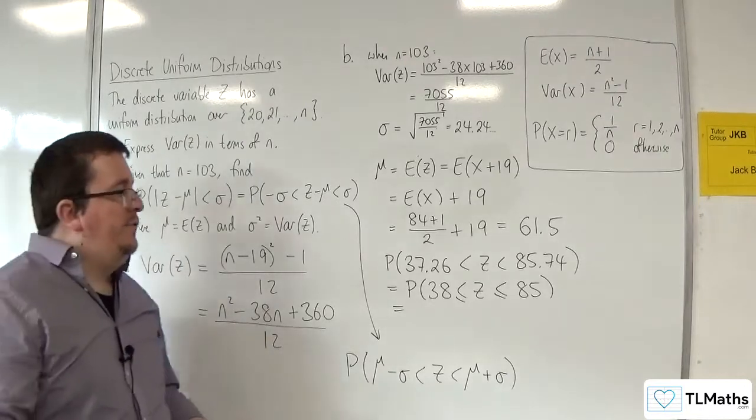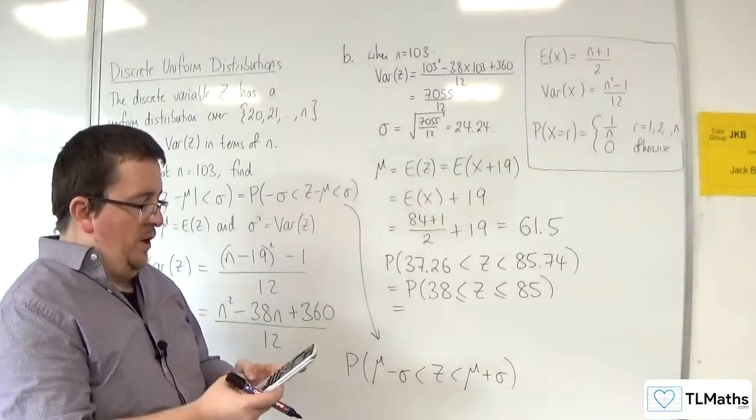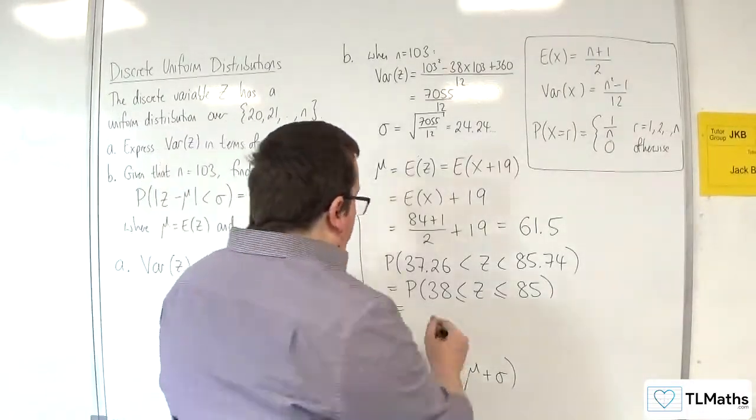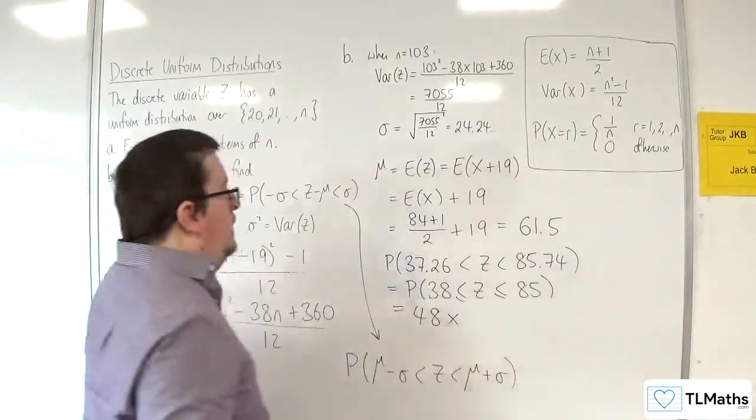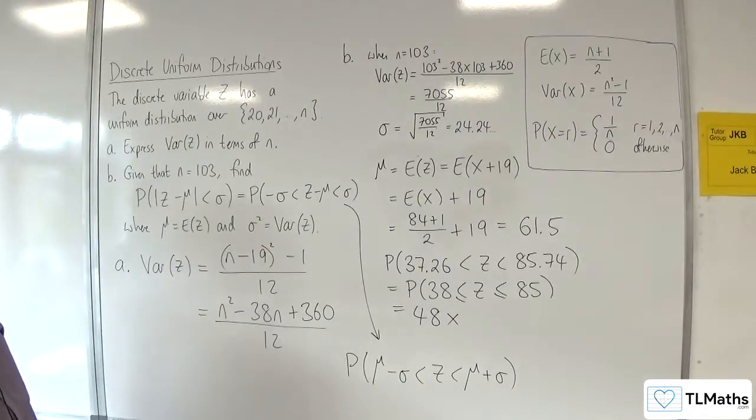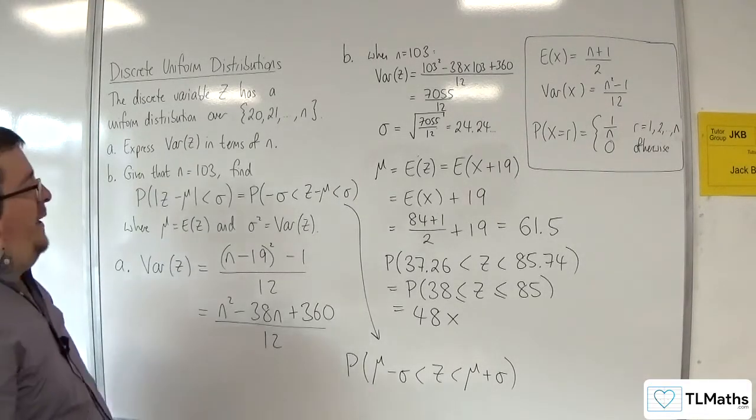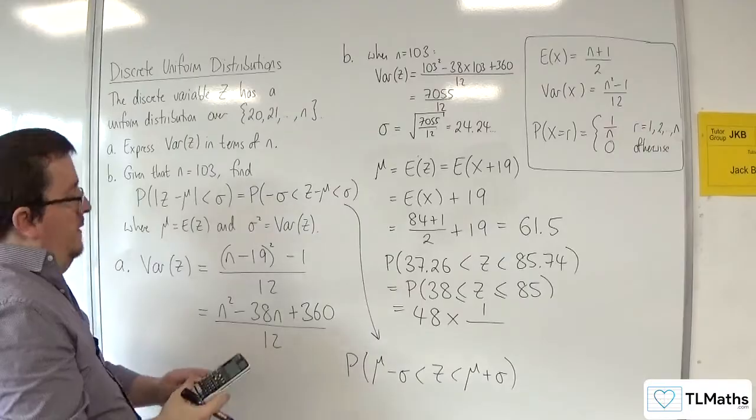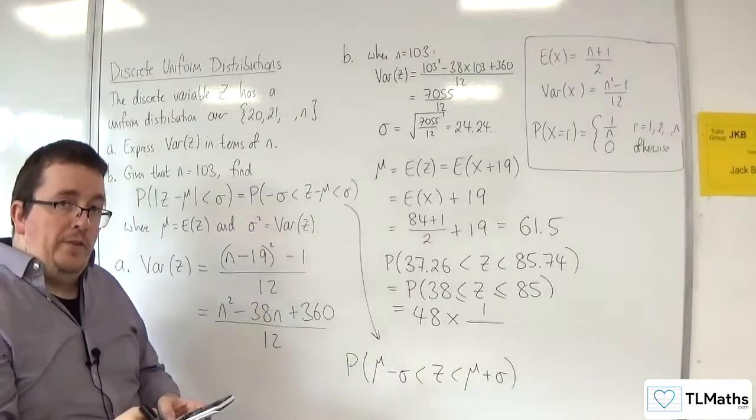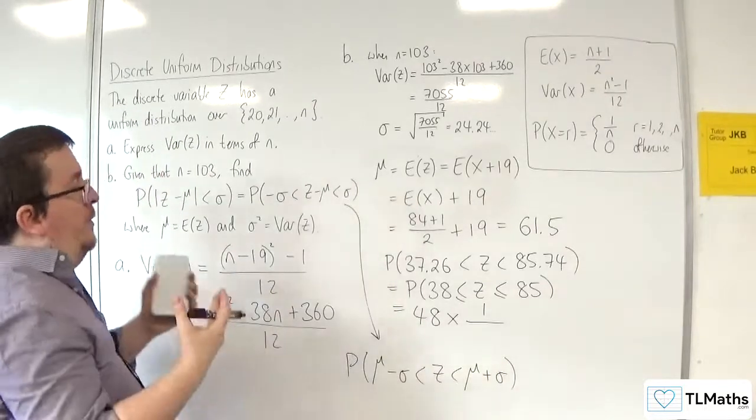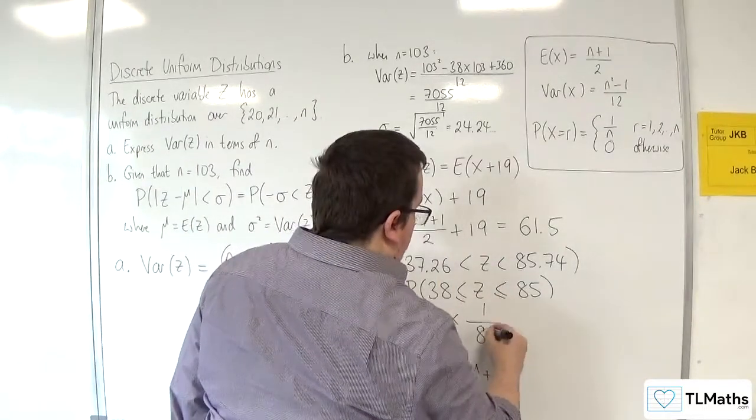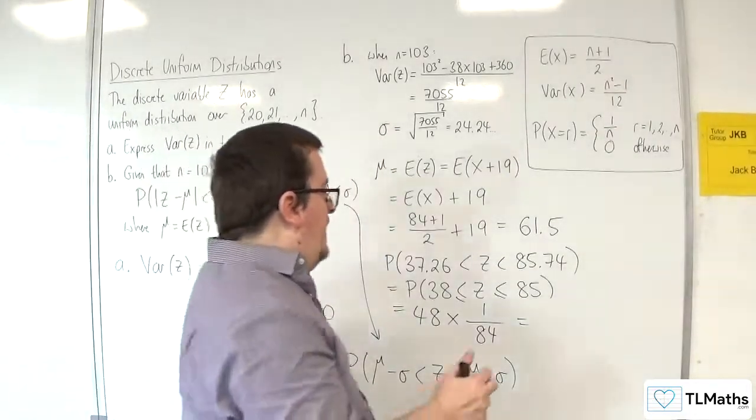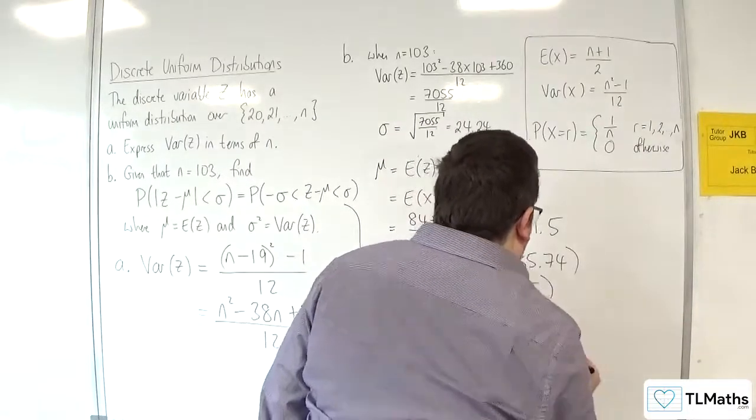Between 85 and 38, 85 take away 38, but then you've got to add one on because you've got to include the 38, would be 48. 48 times by the probability that we have. How many values have we got from 20 up to 103? Well it's 103 take away the 20, then add the 1. So it was the 84 that I had here. We've actually got 48 over 84, and that gets us a probability of 4 sevenths.